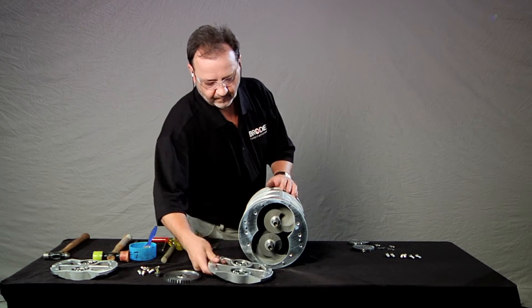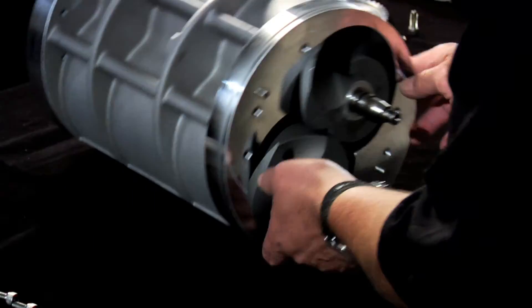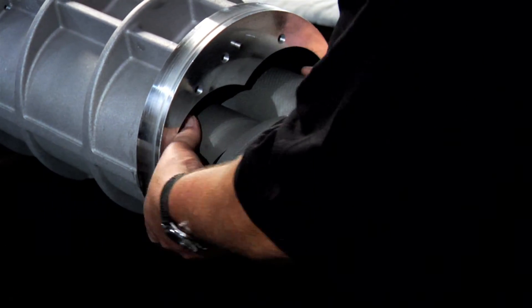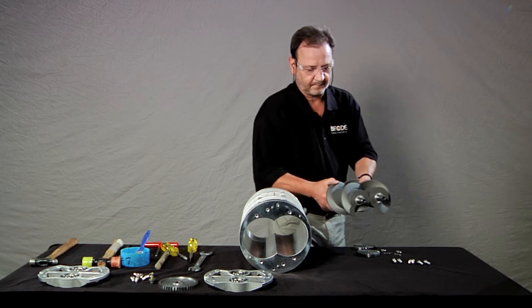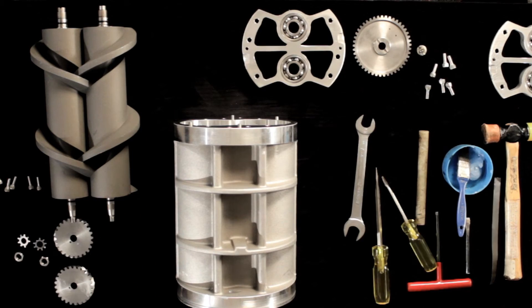Set the end plate aside. Finally, carefully pull the rotors free from the measuring unit. Your disassembly is complete.